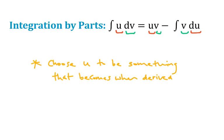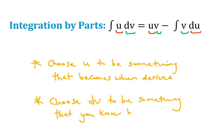Kind of by the same token, we want to be choosing dv to be something we know how to integrate. So choose dv, this other part of the original integral, to be something that you actually know how to integrate. And that's important because